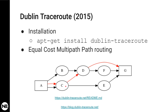Dublin traceroute is based on another type of traceroute called Paris traceroute, with some improvements. I would say Paris traceroute was the first to solve the ECMP routing issue, and Dublin traceroute improves on that by adding features related to how it detects issues with NATted addresses and so on.